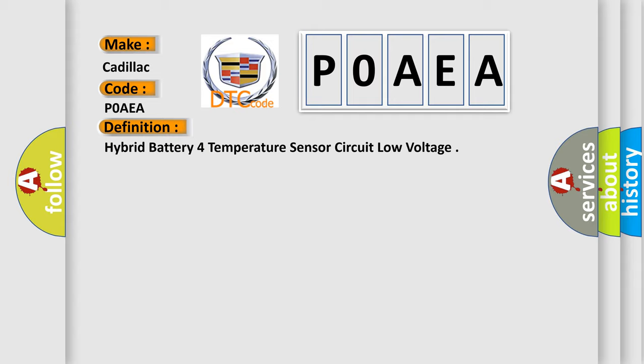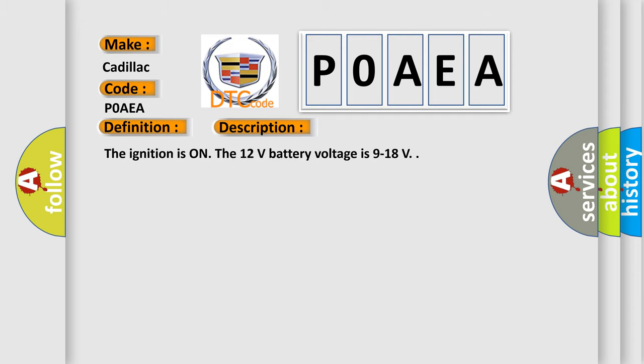And now this is a short description of this DTC code. The ignition is on, the 12-volt battery voltage is 9 to 18 volts.